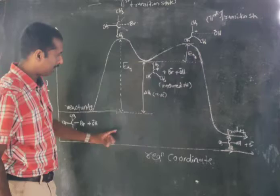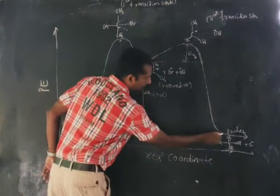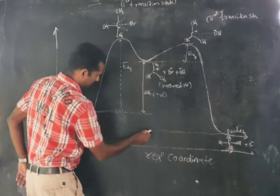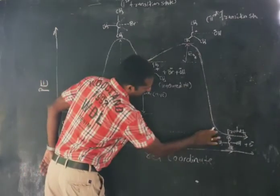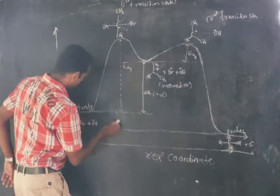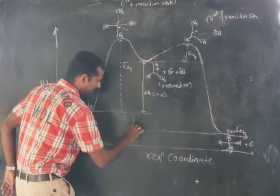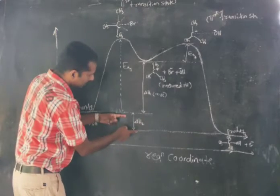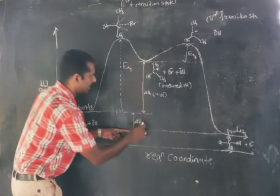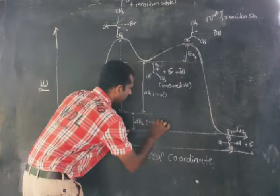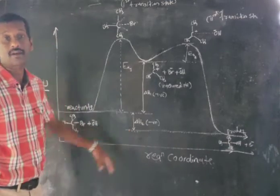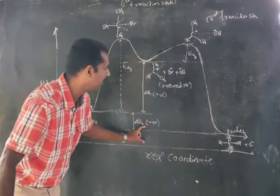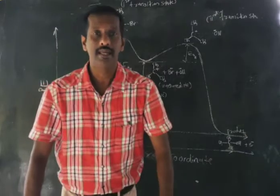Here is the product on the diagram. The energy difference between the reactants and the product is ΔH2. Since the product lies at a lower energy level than the reactants, ΔH2 is negative — meaning the overall reaction is exothermic.